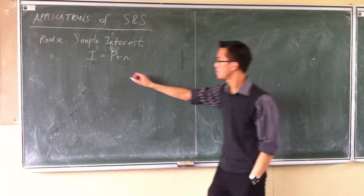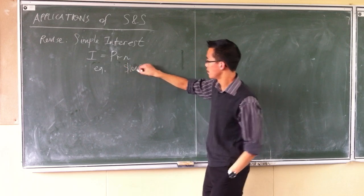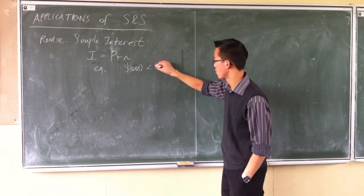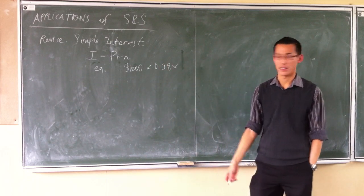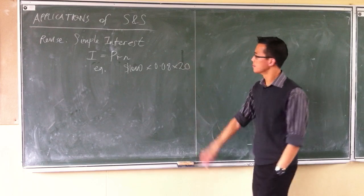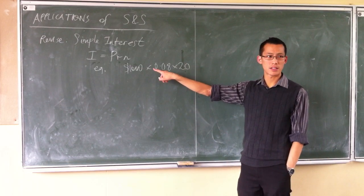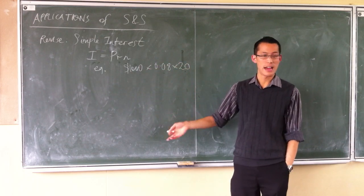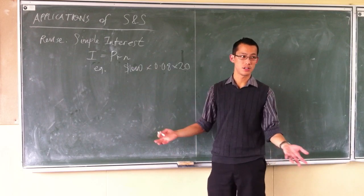For instance, if I started with $1,000 and I had it in there for 8% interest, so that's 0.08, and we had it in there for 20 years, 20 times that would be 1.6, so you'll get $1,600 interest. I guess you would add that on to the original $1,000, so $2,600 would be your amount.